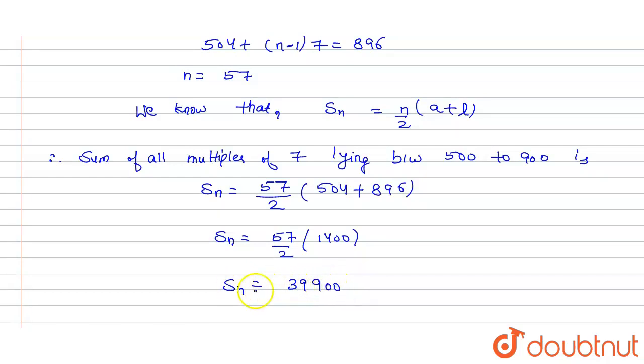So this is the required sum of all multiples of 7 lying between 500 to 900, which is 39,900 and this is our required answer.